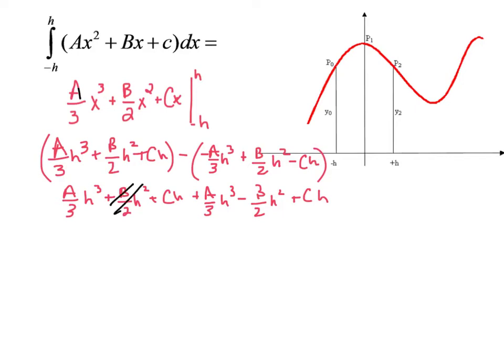Well, these two terms cancel because they are zero. We've got 2a over 3 x cubed plus 2ch. Well, knowing where I need to end up, I'm going to factor a 3 out. Again, h over 3.